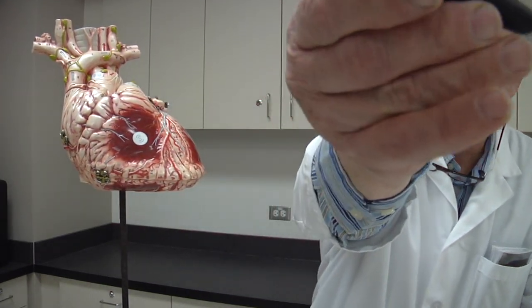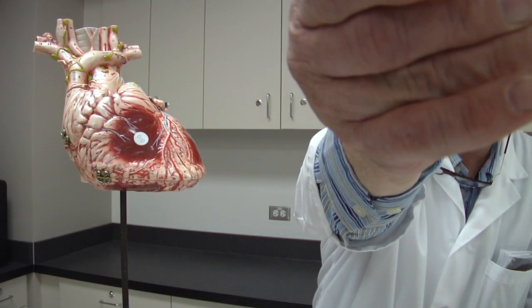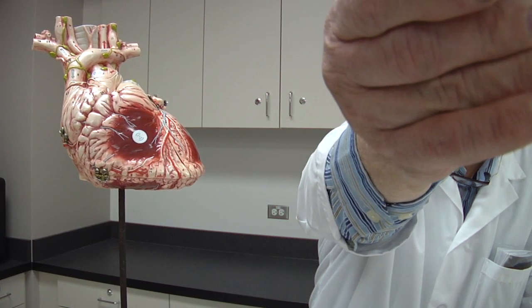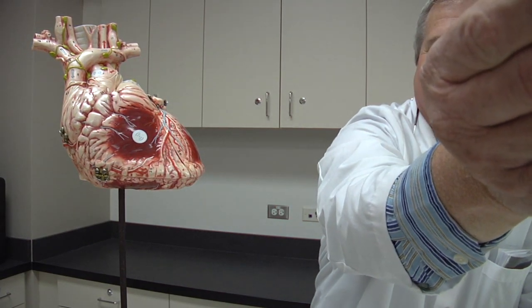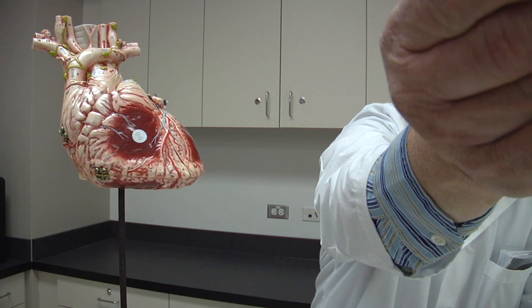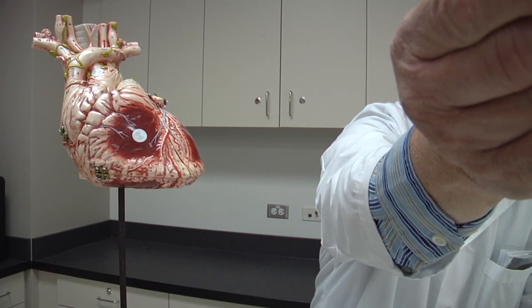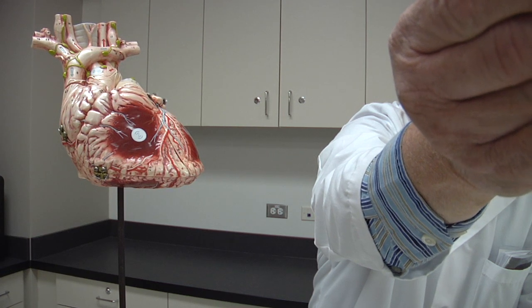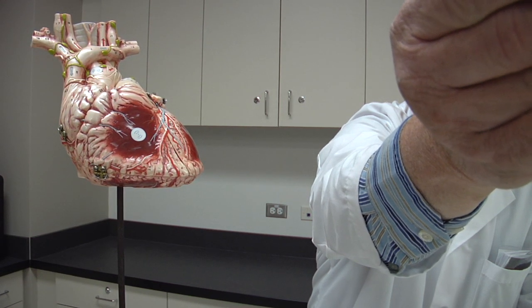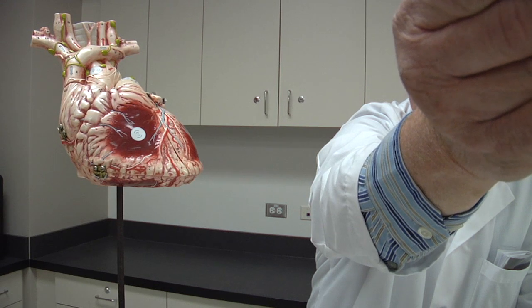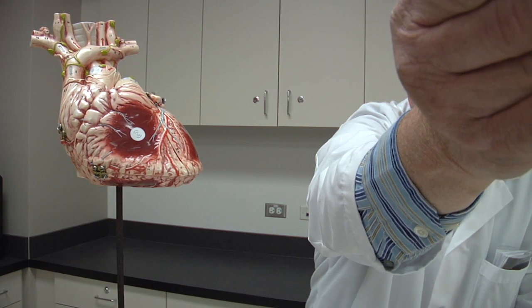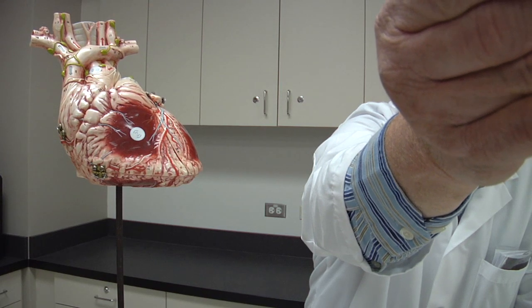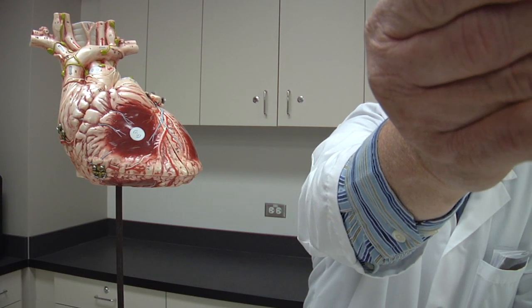This is the LAD, or left anterior descending coronary artery, or anterior interventricular branch of the left coronary artery. It supplies blood to the anterior lateral myocardium apex and interventricular septum of the heart. Since it supplies about 55% of the blood flow to the left ventricle, it's been called the widow maker, since blockage of this artery usually results in death.